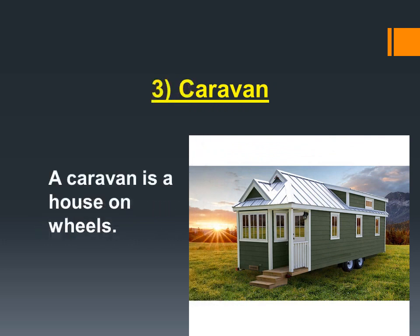The third type is a caravan. A caravan is a house on wheels. As you can see in the picture, the house has wheels like a vehicle, which means this house can move from one place to another. A house that moves from one place to another on wheels is called a caravan.